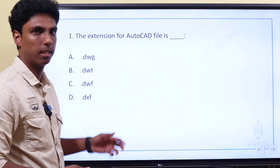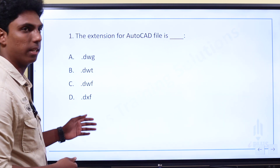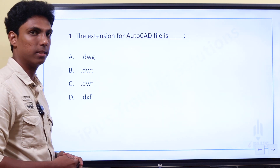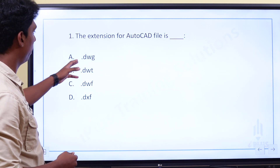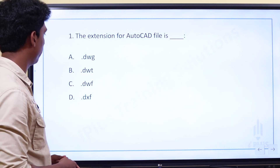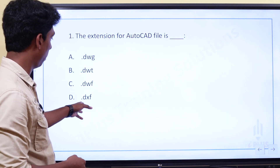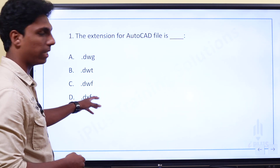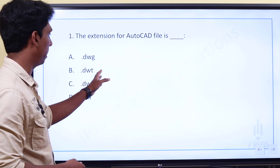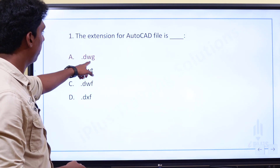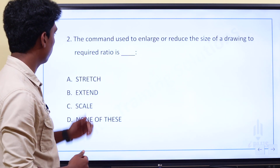We are looking at the first question. The extension for an AutoCAD file — the options are .dwg, .dwt, .dxf. The answer for the AutoCAD file extension is .dwg.